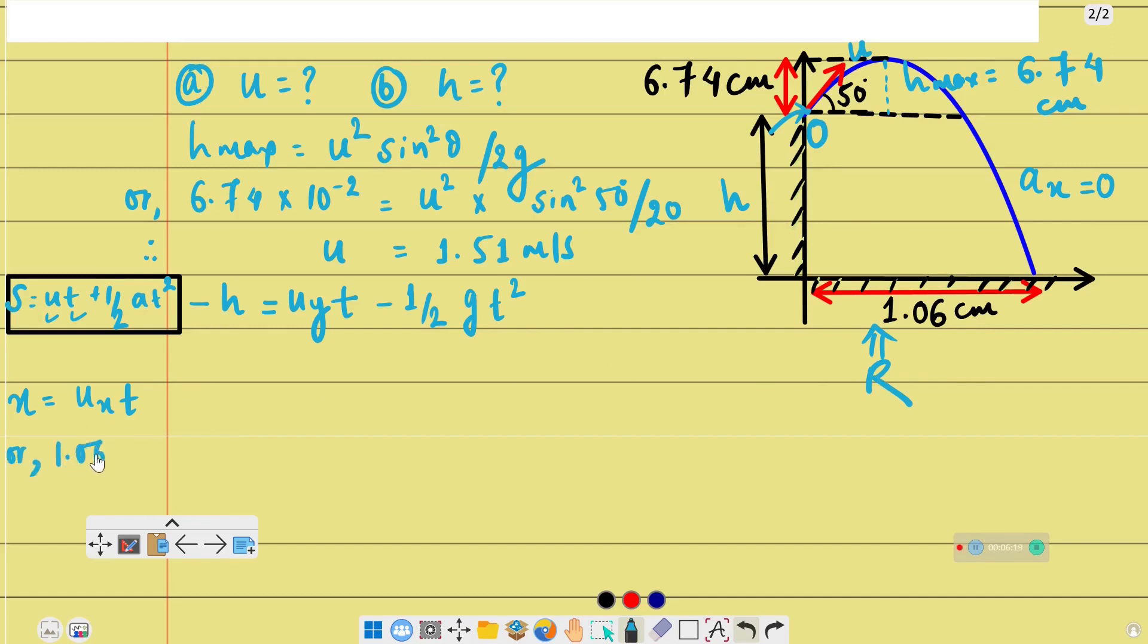So x = 1.06 × 10⁻² equals u_x, which is u cos θ. The x-component is u cos 50° times t. From here I can solve for t and get t = 1.09 seconds. Using this relation, I can find the value here.